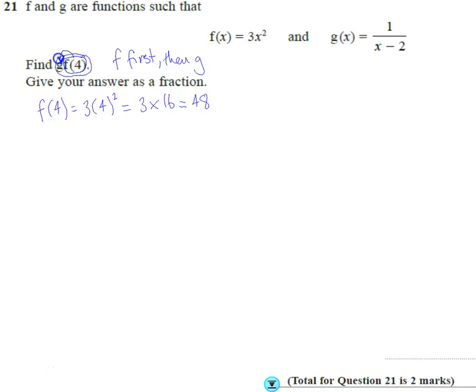into the g. Okay, so we're going to find g of 48, which is 1 over 48 minus 2, which is 1 over 46. Give our answer as a fraction: 1 over 46. Are we done?